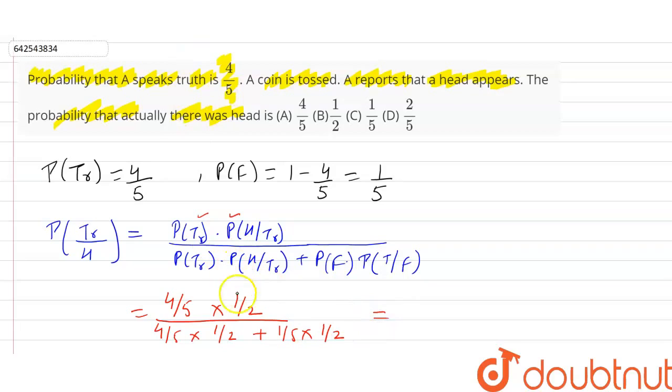From here 1 upon 2 gets cancelled and 4 upon 5 plus 1 upon 5 is 5 upon 5, that is 1. So our answer is 4 upon 5, so option A is correct.